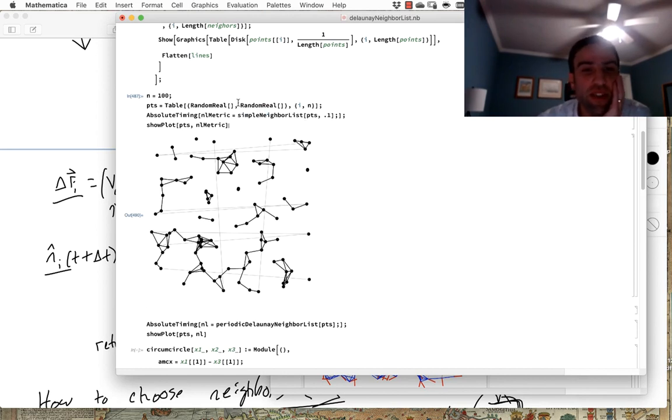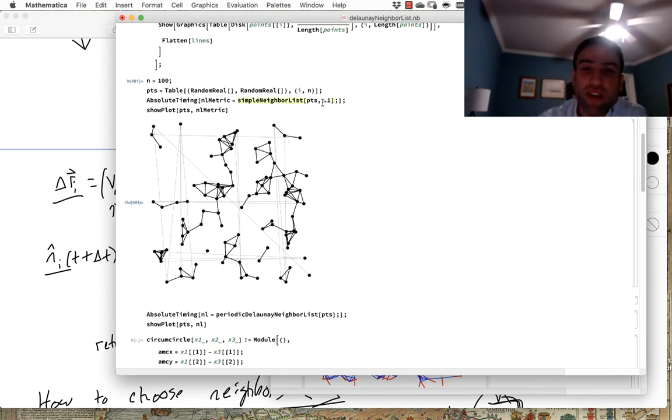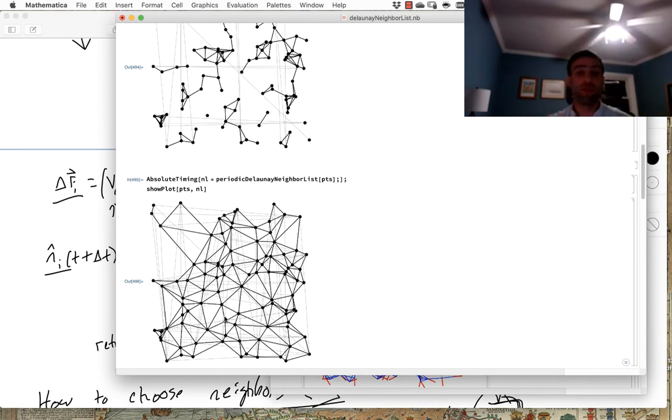In contrast, what if we take exactly the same set of points, and you can see here I'm just randomly, uniformly throwing them down in the box, and generating a neighbor list not based on this kind of metric criteria, but based on, in this case, constructing a Delaunay triangulation, or equivalently a Voronoi tessellation. And you can see the character of the neighbor list is very different. First, in this setting, there's a well-defined average number of neighbors that you will always get, just based on topological considerations. And also, the distances between neighbors is much broader now. You can have some neighbors that are very close to each other, some neighbors that are very far.